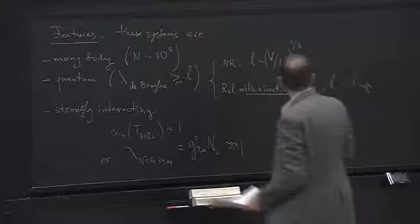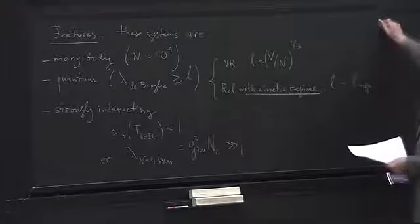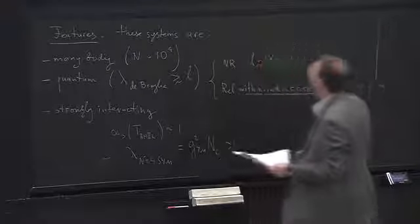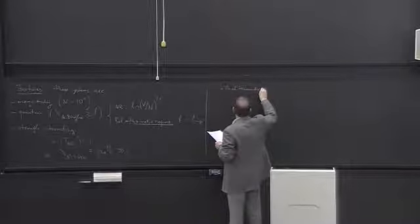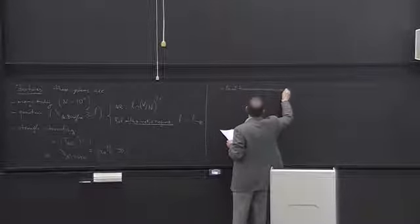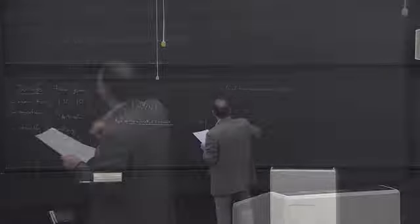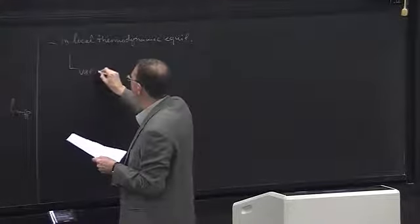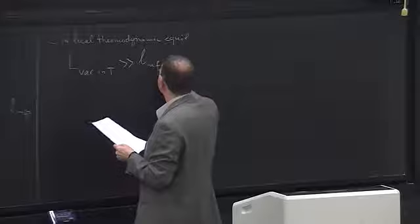Finally, property number four, or feature number four, is that these systems are in local thermodynamic equilibrium. This can be quantified by saying that the length scale of variations in temperature is much larger than the mean free path.